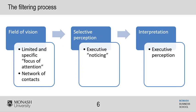It's important to note that the filtering process appears very linear when discussed in the textbook or on a slide. But what can actually happen is the field of vision - the limited specific focus of attention and networks of contacts - along with selective perception - what they actually notice - and interpretation - how they make meaning - can actually change in order. It doesn't always need to be sequential. You might have a selective perception and then go back to your field of vision as things change, which then changes your interpretation.